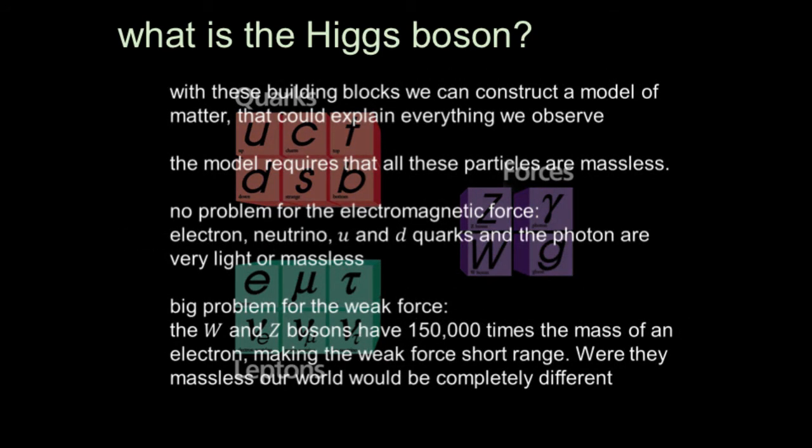With these building blocks, it is possible to construct a model of matter that can explain what we observe. If you put in the strong interactions, it would explain everything we observe. But this model requires that these particles are massless in order for it to make any sense. This isn't a great problem for the electromagnetic force — the electron, the neutrino, the muon, the up and down quarks, and the photon are pretty light by the standards that we measure mass.